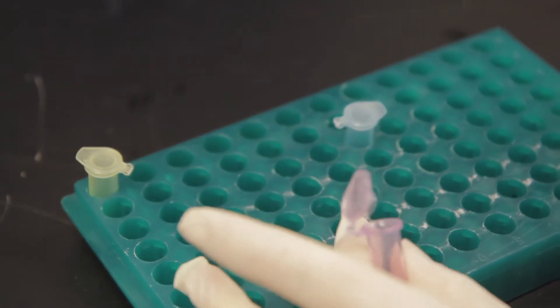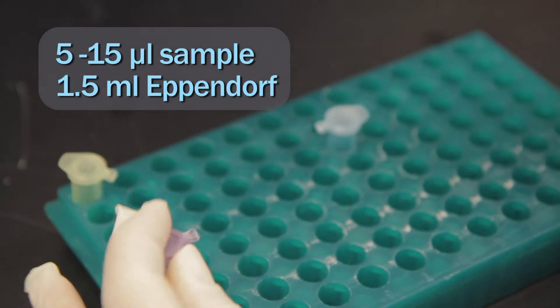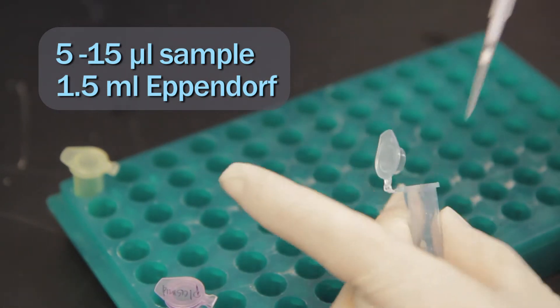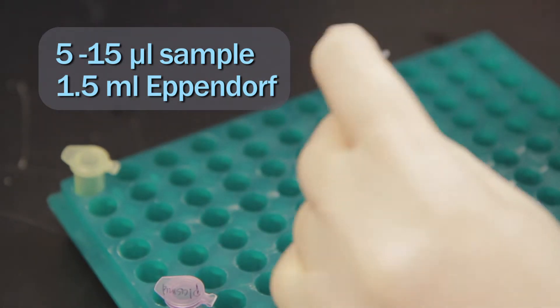If you are returning DNA samples, aliquot 5-15 µL of a miniprep or maxiprep sample into a 1.5 mL Eppendorf.